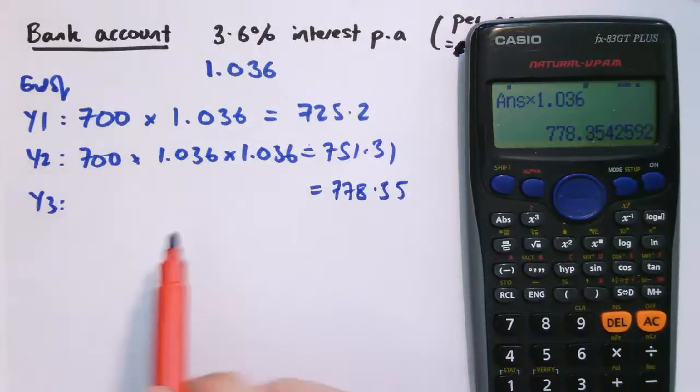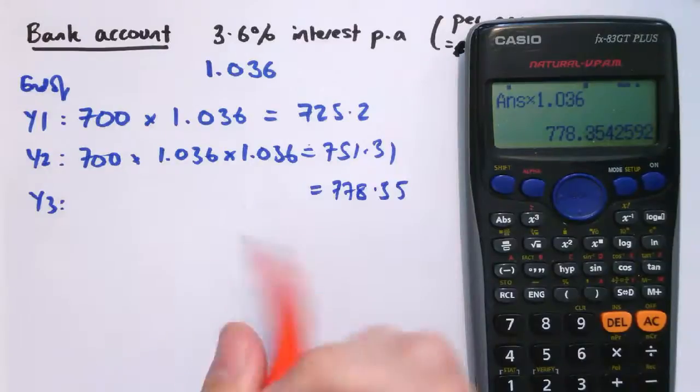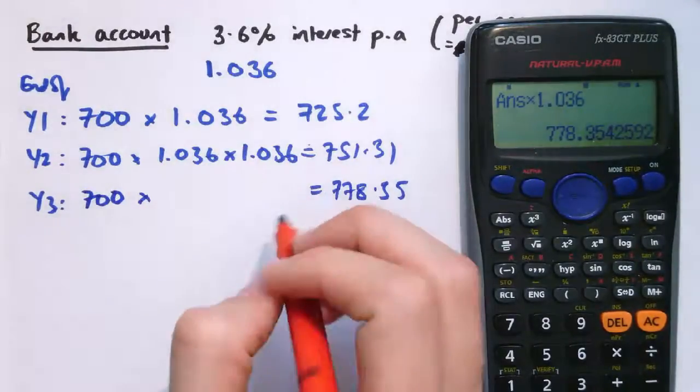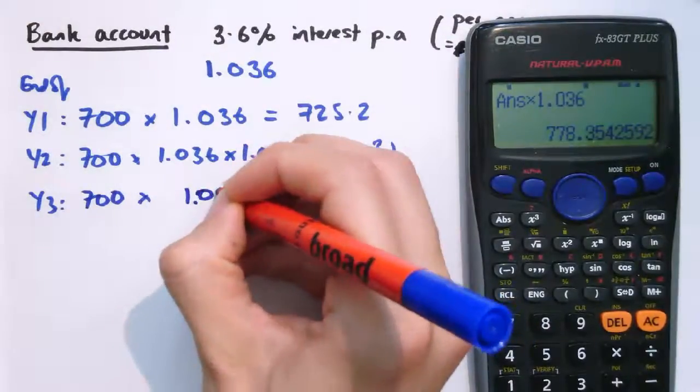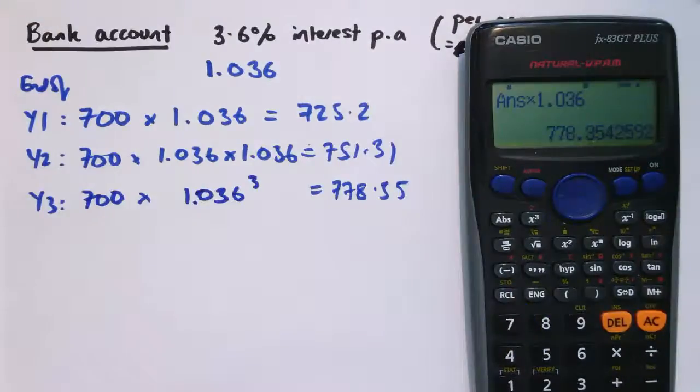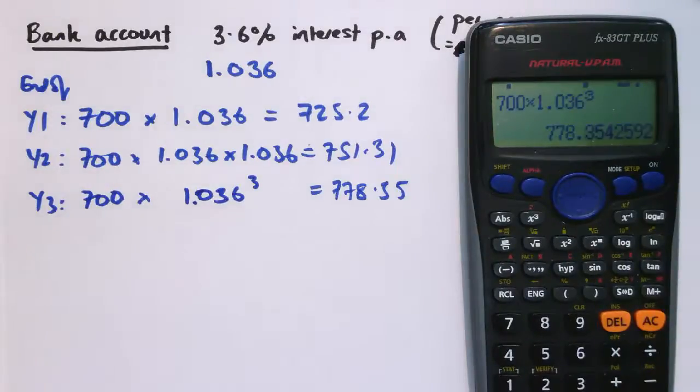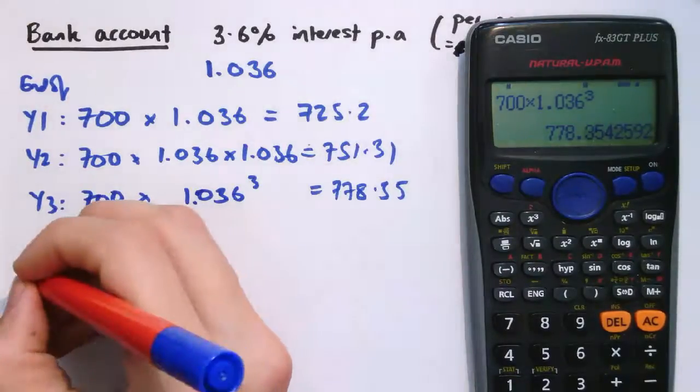Now, what you can see hopefully is that each time you're applying the same scale factor. So at the end of year 3, I'll have 700 times 1.036 times 1.036 times 1.036, and another way of writing that down is 700 times 1.036 cubed. So when I put that into my calculator, if I wanted to go straight to the end of year 3, I could have just done 700 times 1.036 cubed and got to the same value, which is much quicker.